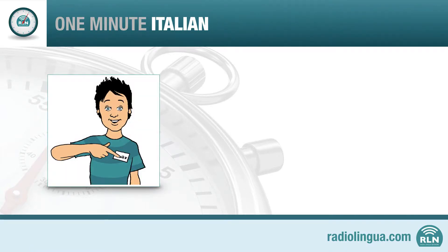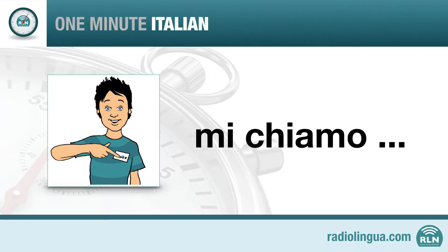...you say 'Mi chiamo'. I would say, for example, 'Mi chiamo Lorraine'. And I would say 'Mi chiamo Gianluca'. You try saying this and put your own name at the end of the phrase.